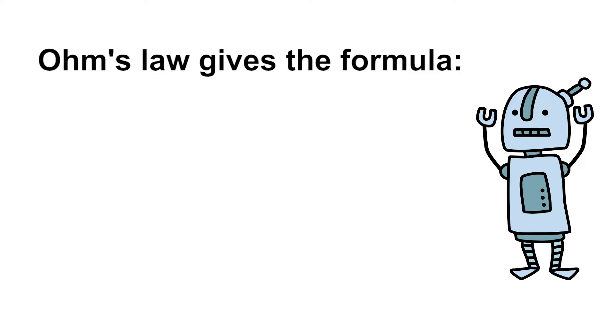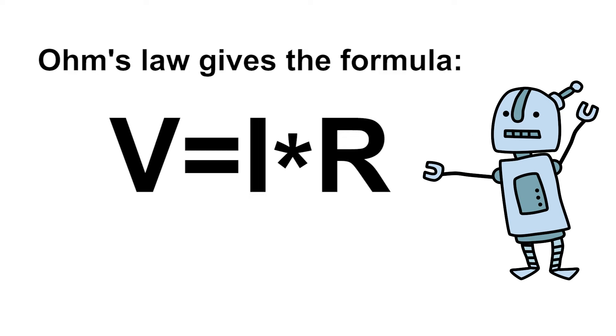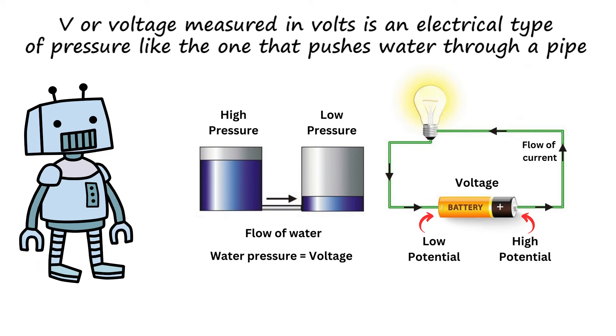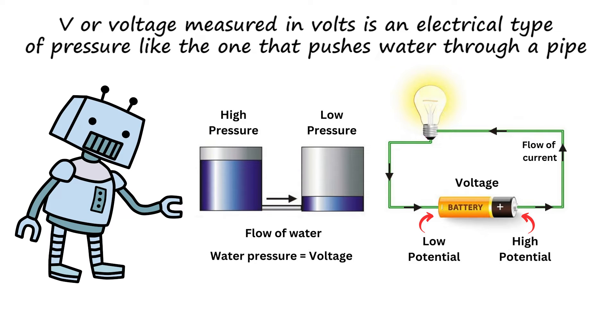Ohm's law gives the formula, V equals I times R. V of voltage measured in volts is an electrical type of pressure like the one that pushes water through a pipe.